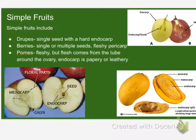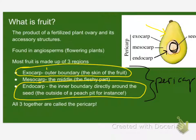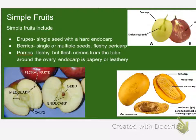So there are three major kinds of simple fruits we're going to talk about: drupes, berries, and pomes. Drupes have a single seed and a hard outer covering. We've got the three regions — exocarp, mesocarp, endocarp — with the seed in the middle. Lump them all together and they're the pericarp. Drupes have a single seed, and the endocarp is hard.